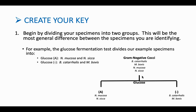Step two of creating a dichotomous key is actually creating the key — mapping it out. Previously, we looked at our data and figured out how we can actually differentiate, and now we're going to start putting this all together.